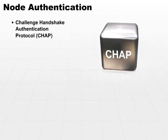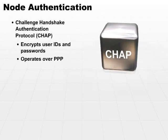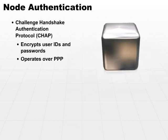CHAP is another remote node authentication protocol. It stands for Challenge Handshake Authentication Protocol. It is similar to PAP in that it provides authentication, but this protocol does encrypt both user IDs and passwords, and like PAP, it works over PPP. So that gives us a good overview of different protocols that provide full-blown connection security across our networks.